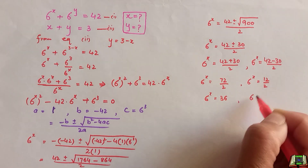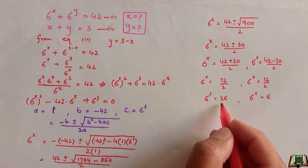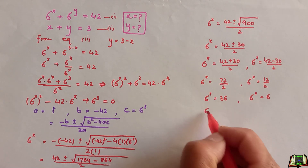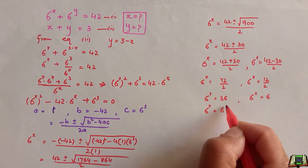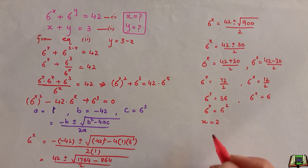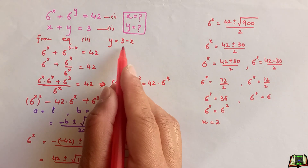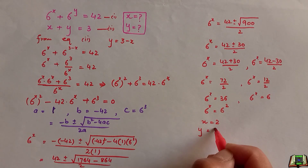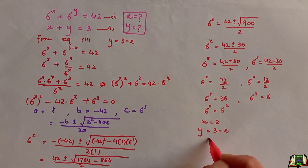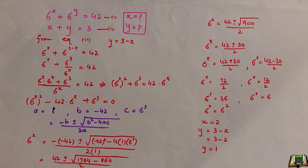We can write 36 as 6 to the power 2. Since the bases are the same, we can equate the powers, so x equals 2. Putting this value of x into y equals 3 minus x gives y equals 3 minus 2, which equals 1. So we get x equals 2 and y equals 1.